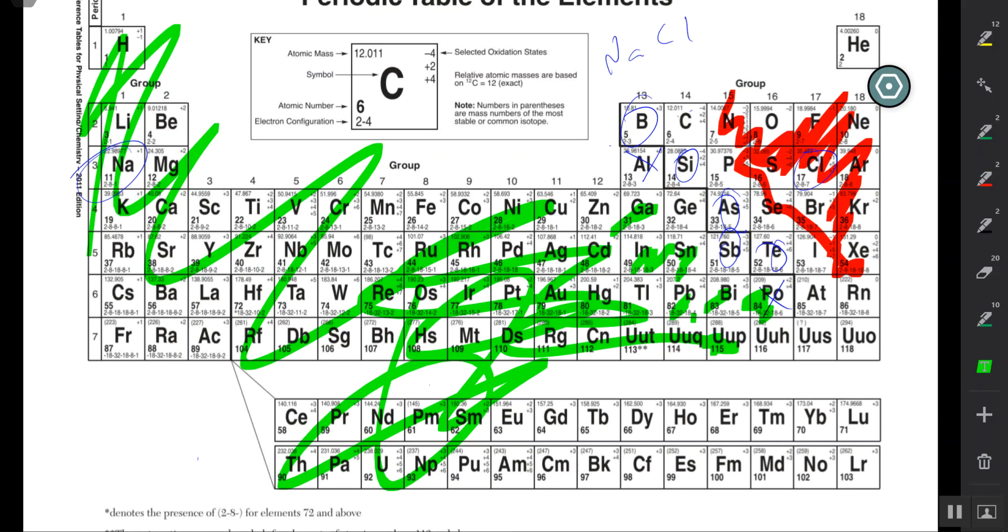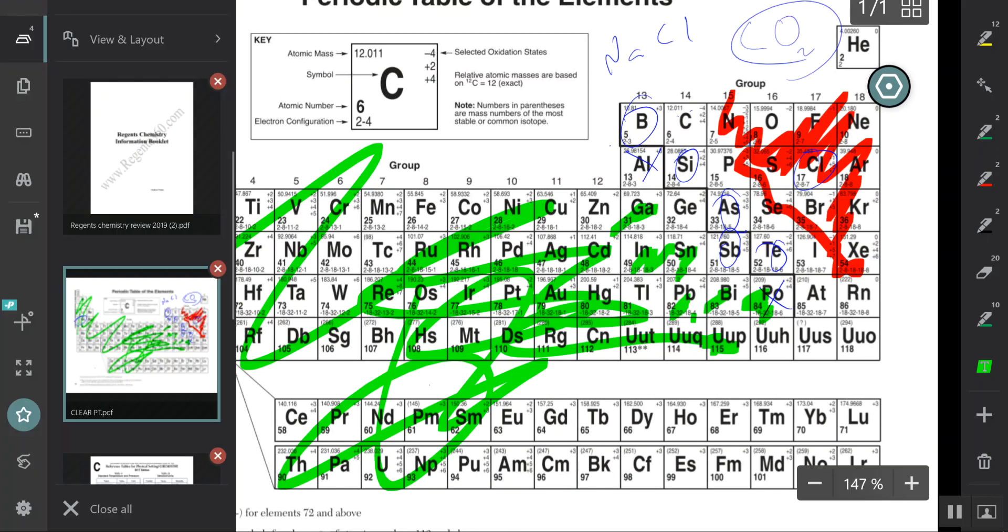Most common one: NaCl. Na is a metal. Cl is a non-metal. If you want to make a molecular compound, obviously you'll have to mix two non-metals together. So carbon and oxygen will make carbon dioxide. That will give you a molecular compound.